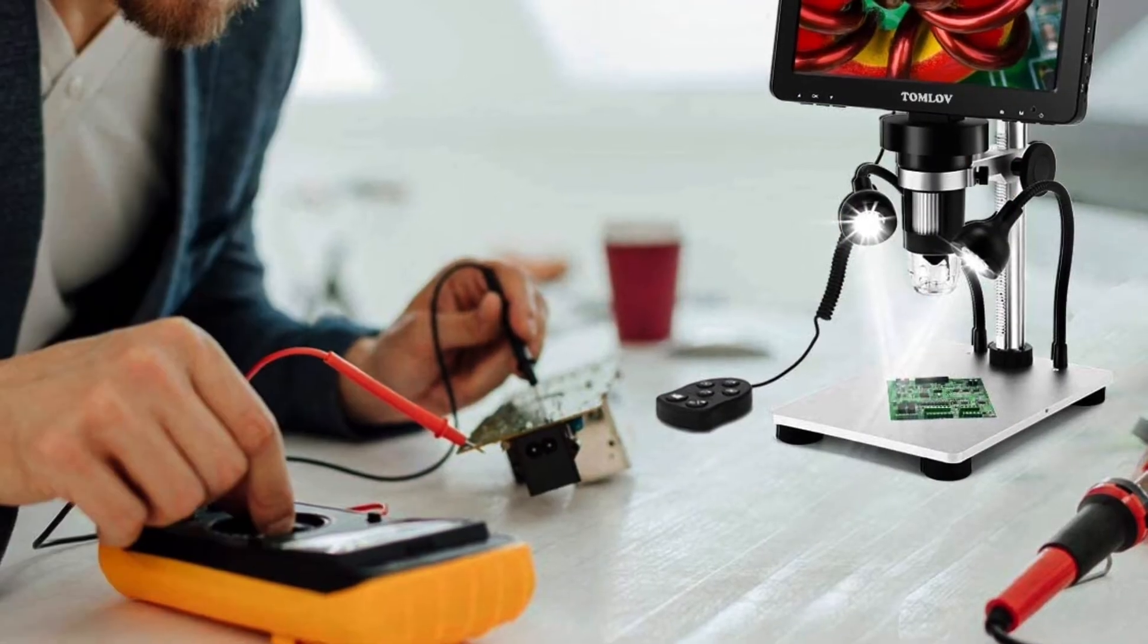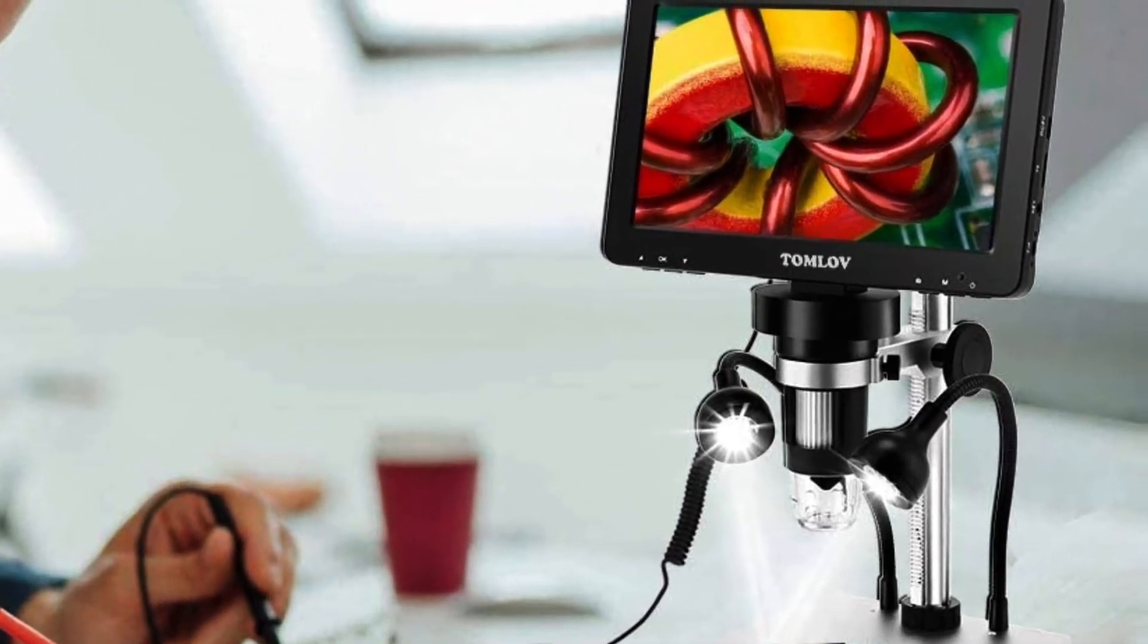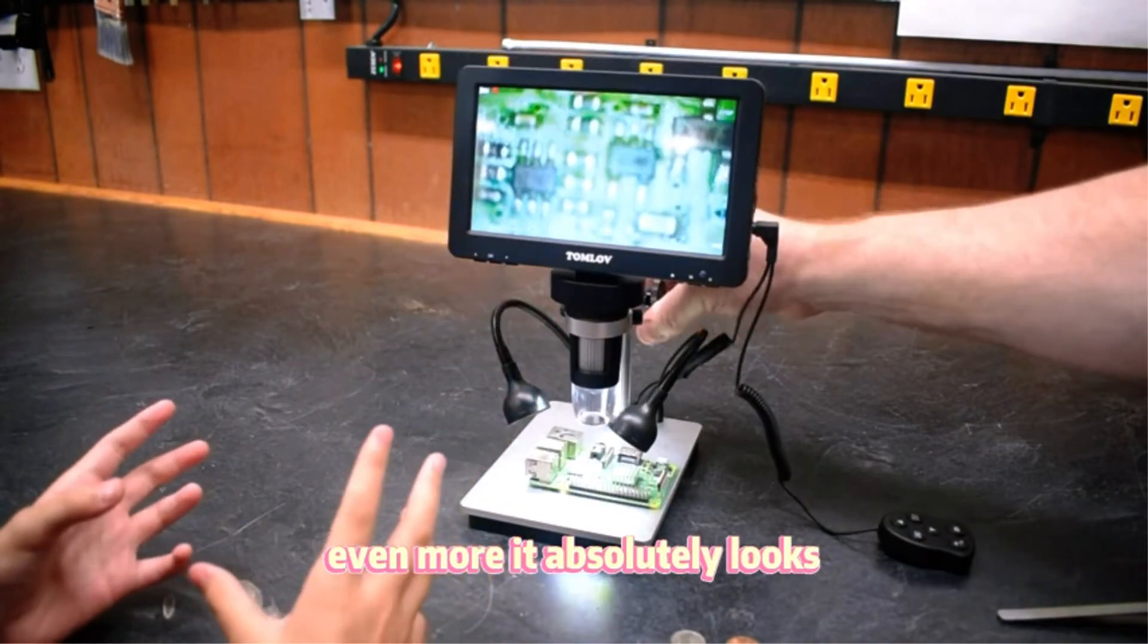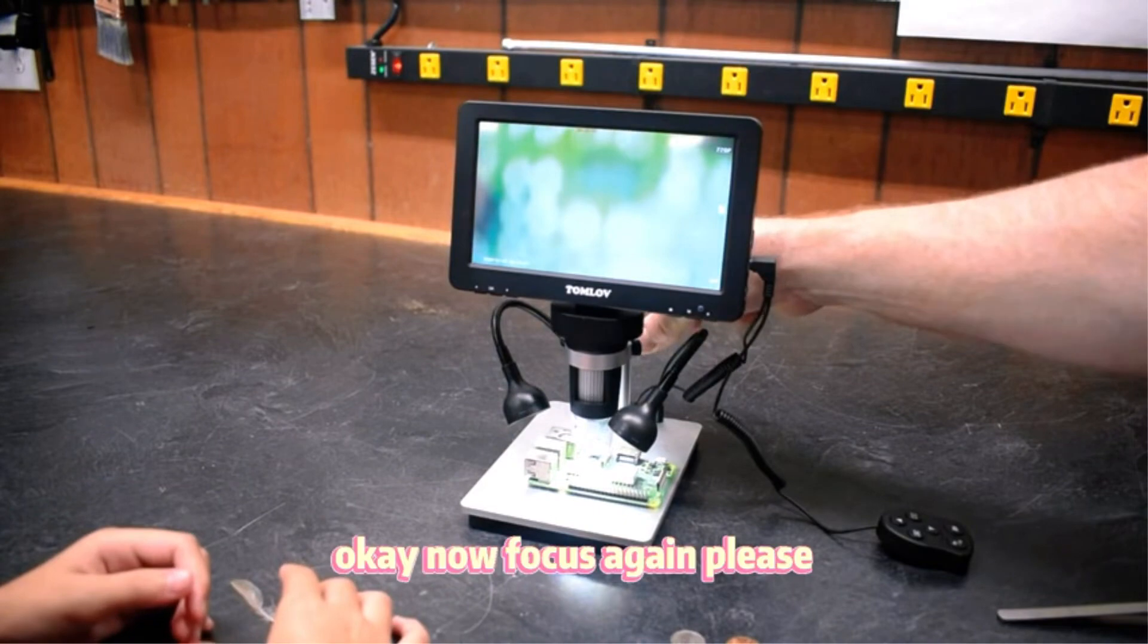Tomlove's digital USB microscope offers various handy features to the user which make it highly versatile. Starting with its display, you will find a large 7-inch screen on the front. This screen can be handy for viewing its 12MP camera that supports 1080p video.